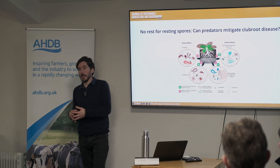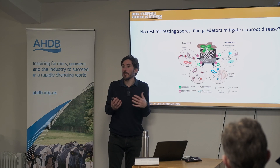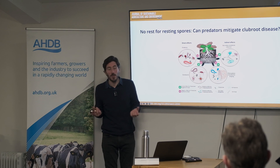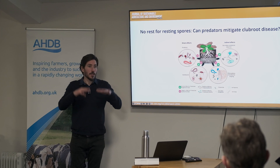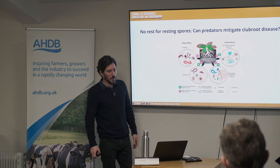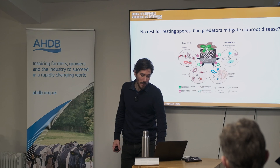Another example: 'No rest for resting spores — can predators mitigate clubroot disease?' Protozoa and nematodes will actually consume pathogen spores — they eat them. When beneficial microbes or larger organisms prey on pathogens, they keep pathogen levels suppressed below economic thresholds. The pathogens are always there, but we're just keeping them below threshold.